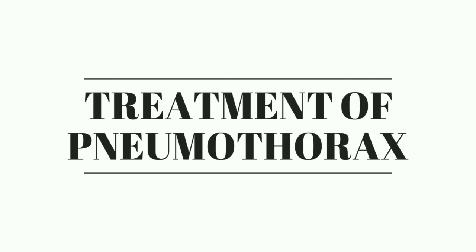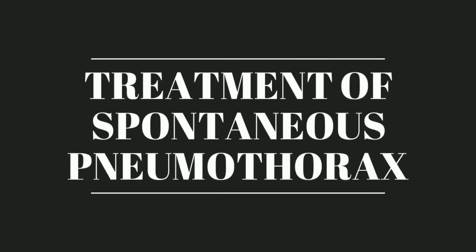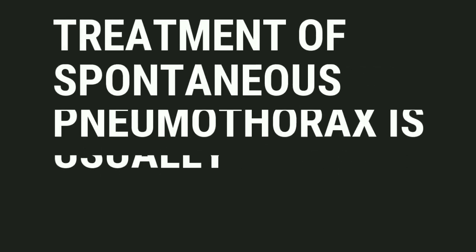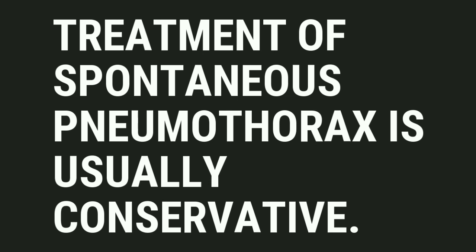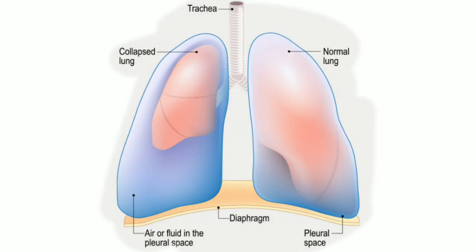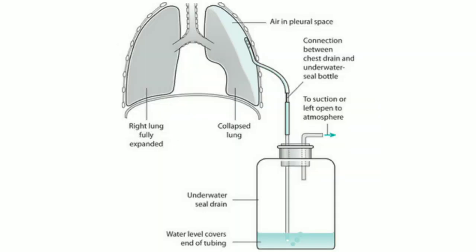Now let's talk about the treatment of pneumothorax. Treatment depends on its type. For spontaneous pneumothorax, treatment is usually conservative — careful monitoring when there is no sign of increased pleural pressure, lung collapse is less than 30%, and no dyspnea. But if more than 30% of the lung collapses, a thoracostomy tube is inserted in the second intercostal space in the mid-clavicular line to re-expand the lung, and this tube is connected to underwater seal drainage.